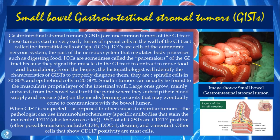Smaller tumors can usually be found in the muscularis propria layer of the intestinal wall. Looking at the image of the small intestine layers — from innermost to outermost — the muscularis layer sits in between, and this is where GIST tumors occur.